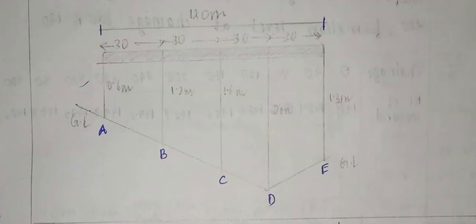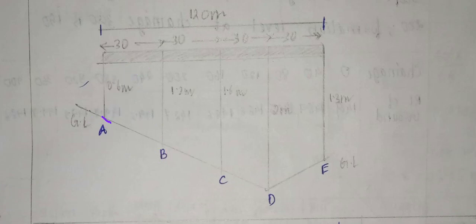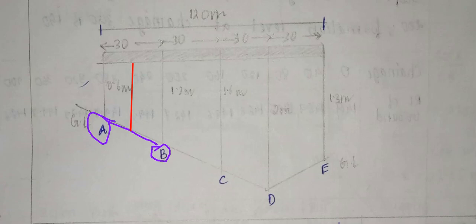The third column records the mean depth, which is the average of depths at consecutive stations. The mean depth between stations is used for area calculation. For each interval, the mean depth (dm) = (depth at first station + depth at second station) ÷ 2.